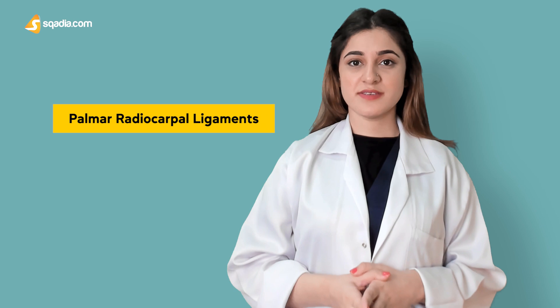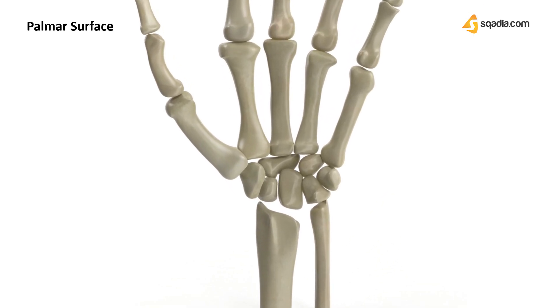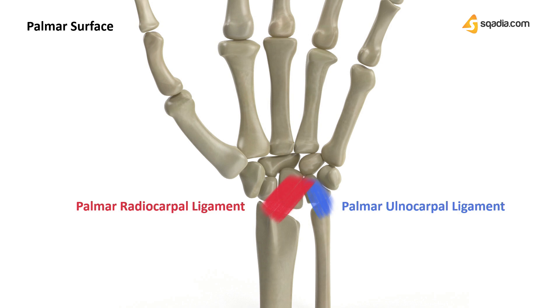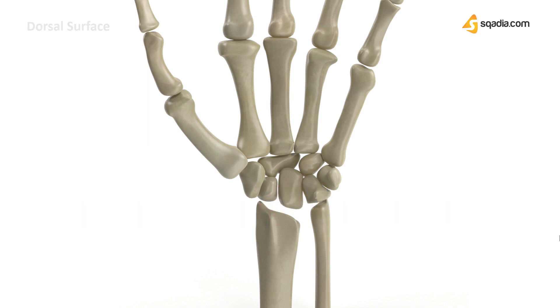Now diving into the details of each, starting with the palmar surface. The Palmar Radiocarpal Ligament is present on the palmar surface. As the name indicates, it is located between the radius and the carpal bones on the palmar surface of the wrist — palmar surface meaning towards your palm. It appears V-shaped when viewed collectively with the Palmar Ulnocarpal Ligament. It originates from the anterior border of the radius and goes distally towards the carpal bones including the scaphoid, lunate, and capitate bones. It consists of four major parts.